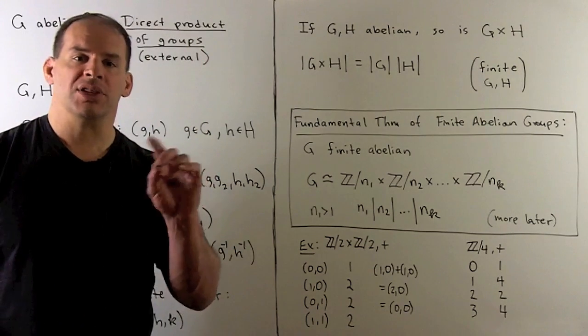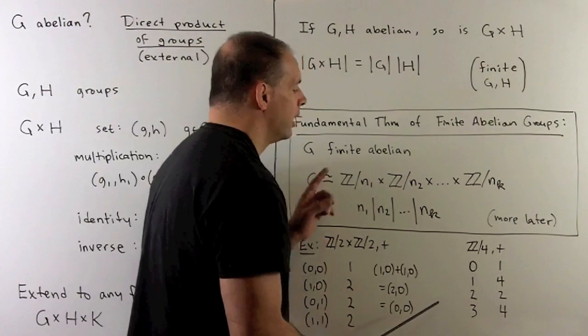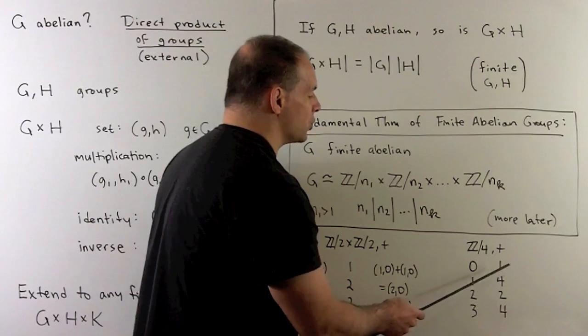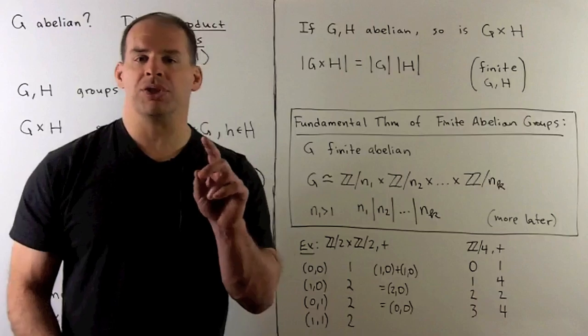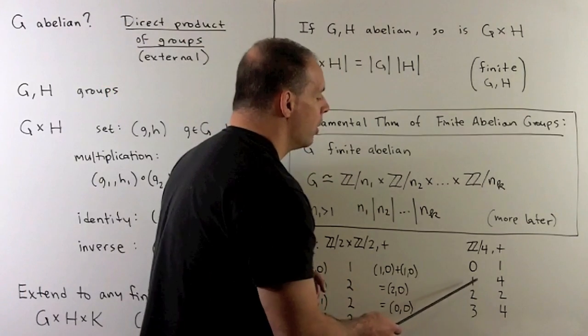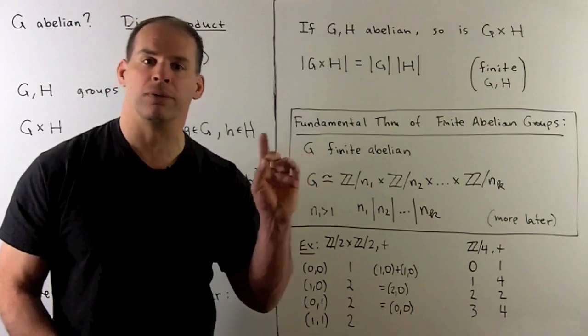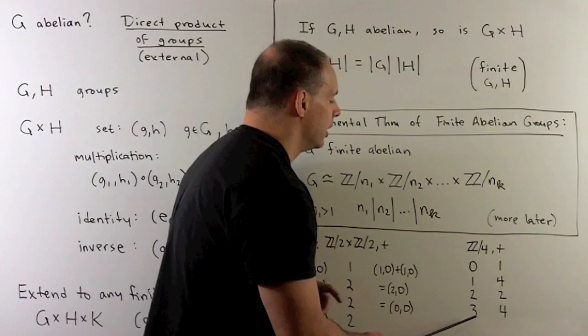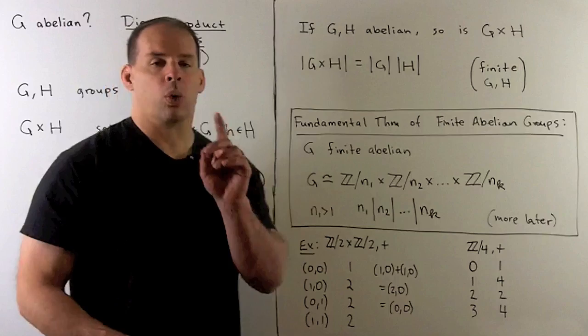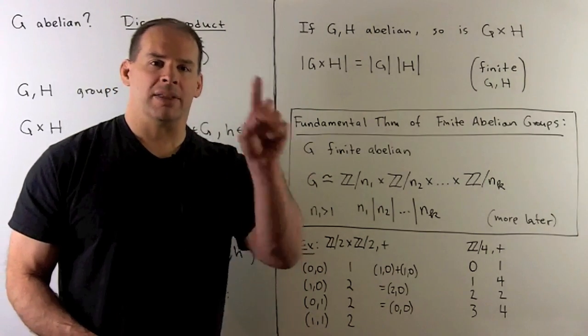To compare, let's consider another four element group: Z mod 4 under addition. The elements here are zero, one, two, three. Zero is our identity with order one. Two - we add two plus two, we get four which goes to zero, our identity, so two has order two. For one, we have one plus one plus one plus one equals four, goes to zero, so order four, same way for three. We note these two groups look very different - the orders of their elements are not matching up, but we need more language to make this precise. This idea is going to be called isomorphism.